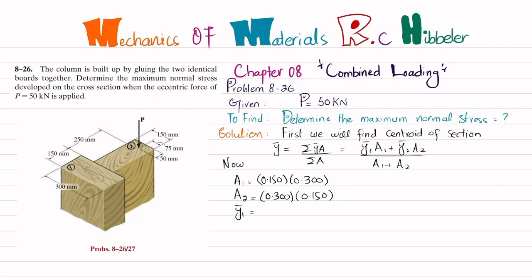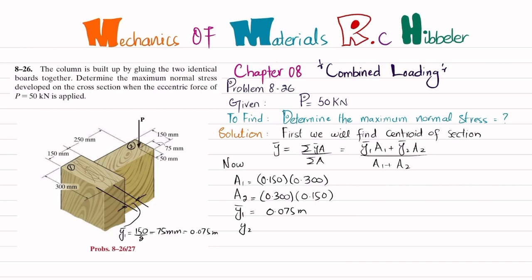Taking the bottom edge as the reference line, y₁̄ is the distance from the reference line to the mid of board one. y₁̄ = 150 mm / 2 = 75 mm = 0.075 m.